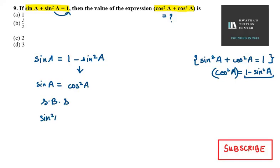Sin square A, and if you square cos square A, you will get cos raised to power 4A. So this is one part. Now, how can we write sin square A using identity? Sin square A will be 1 minus cos square A.